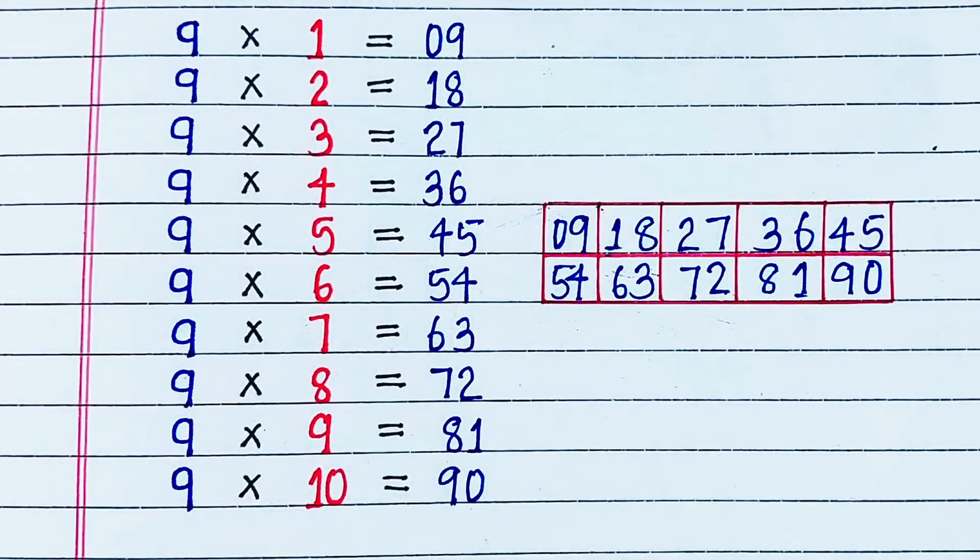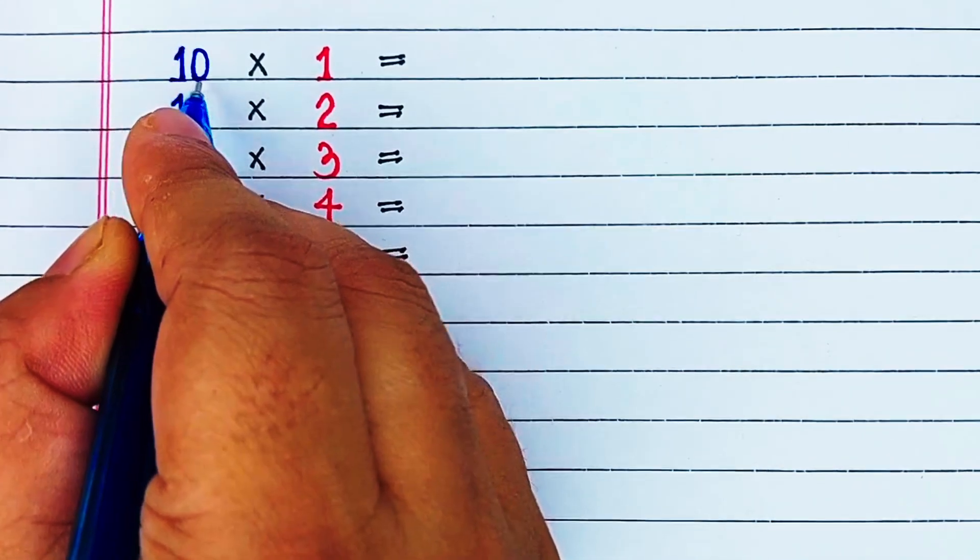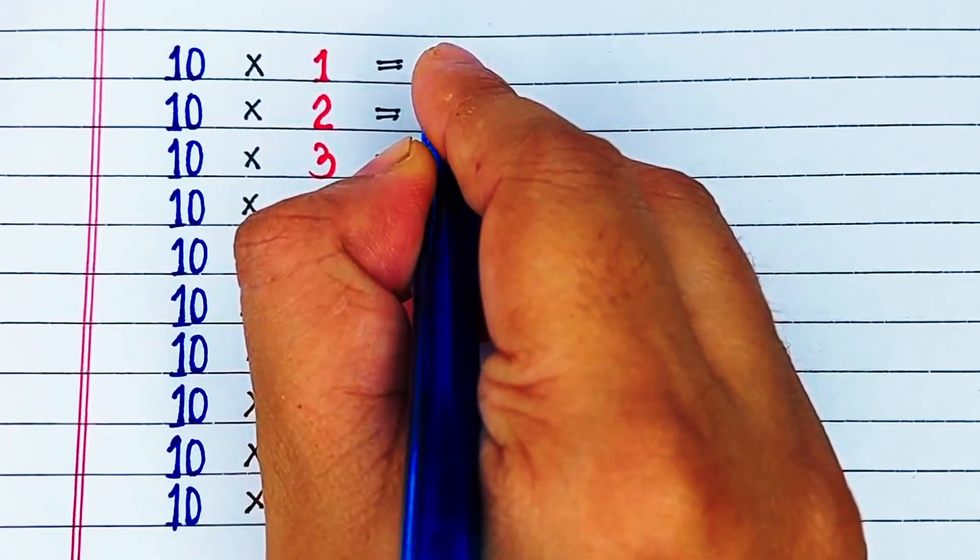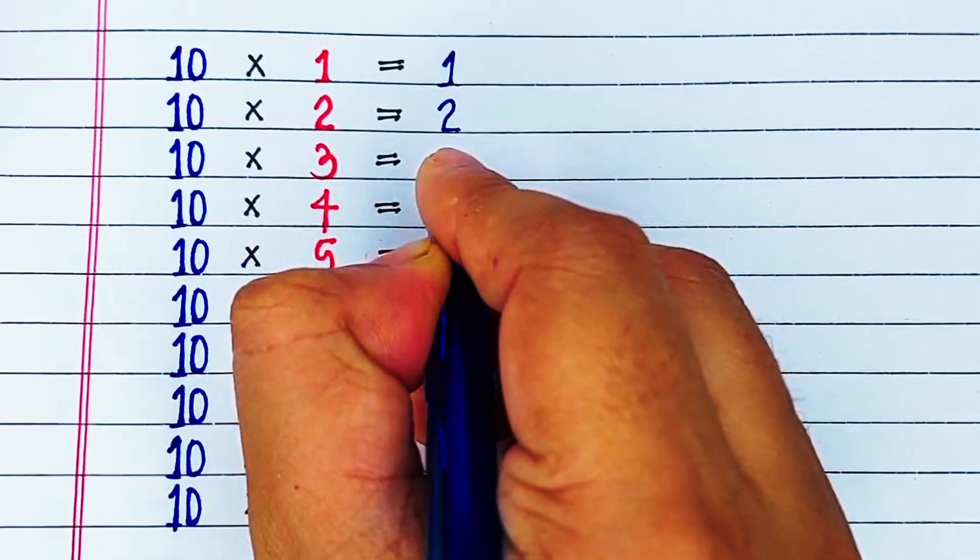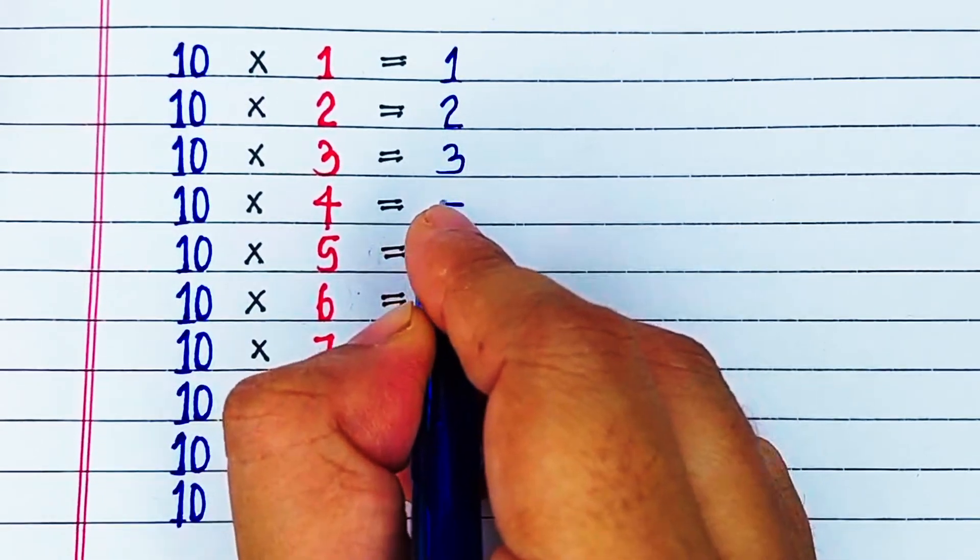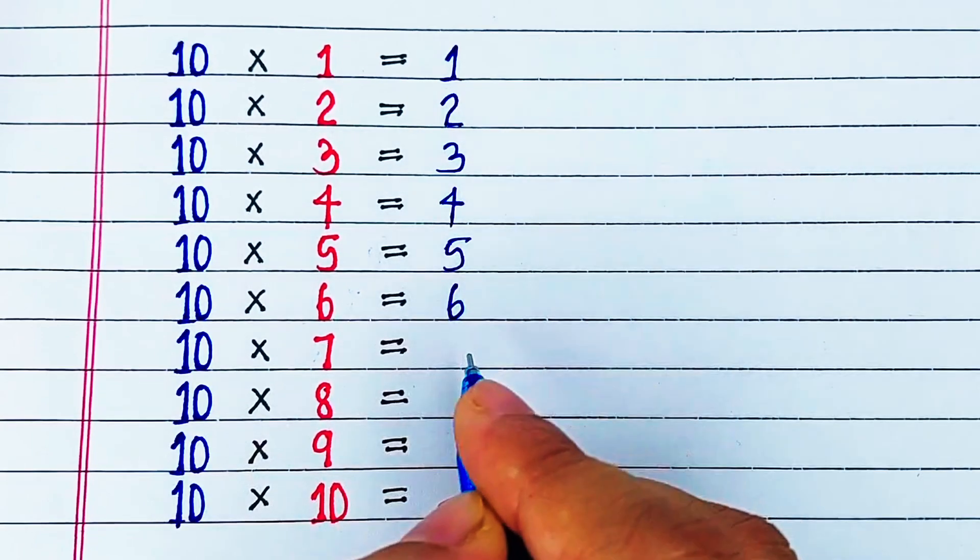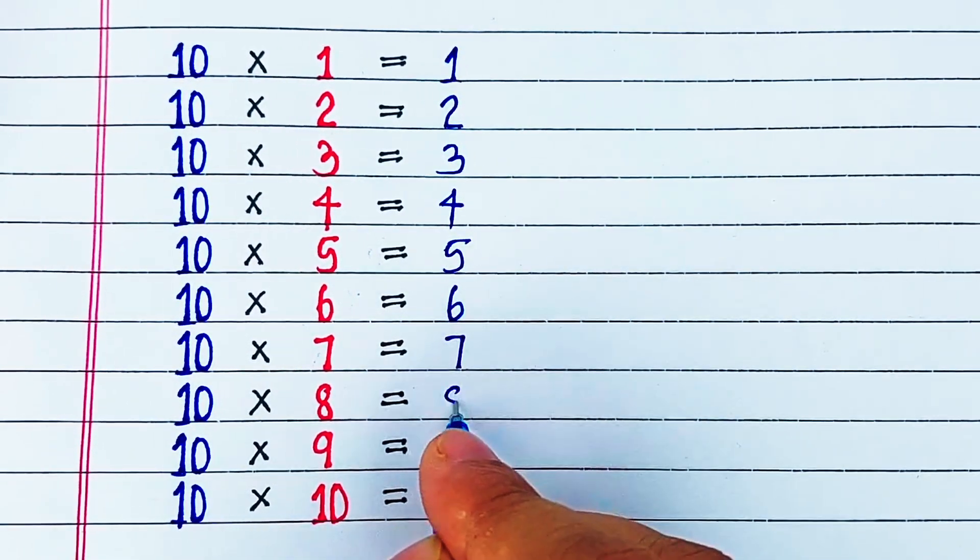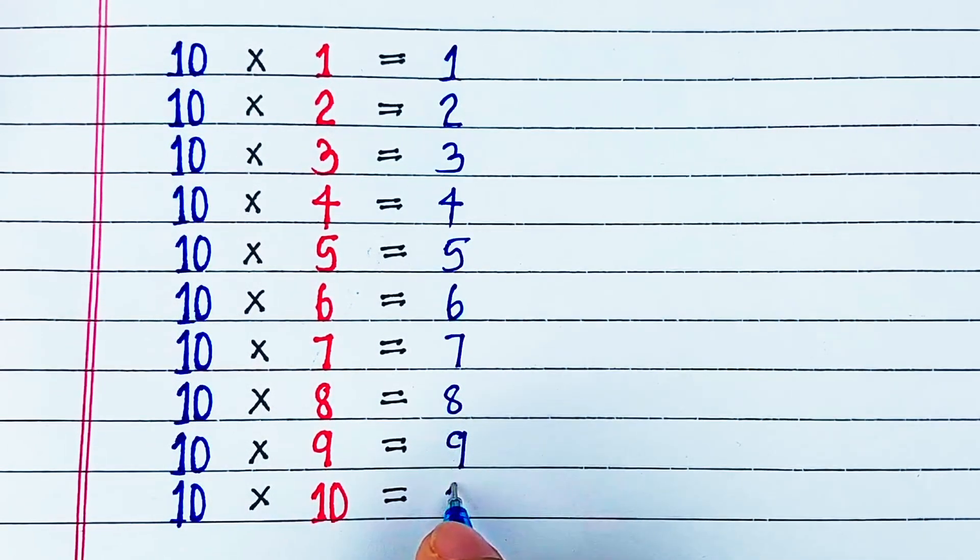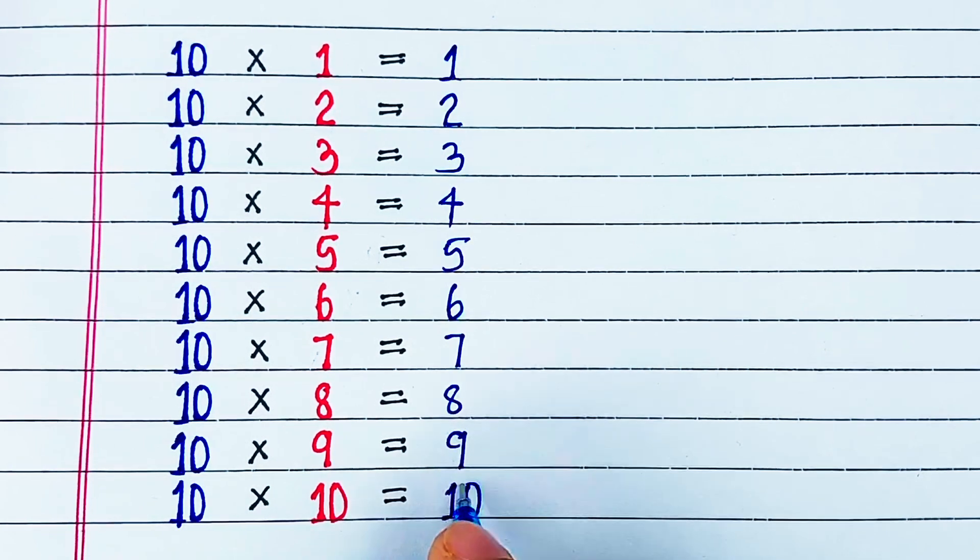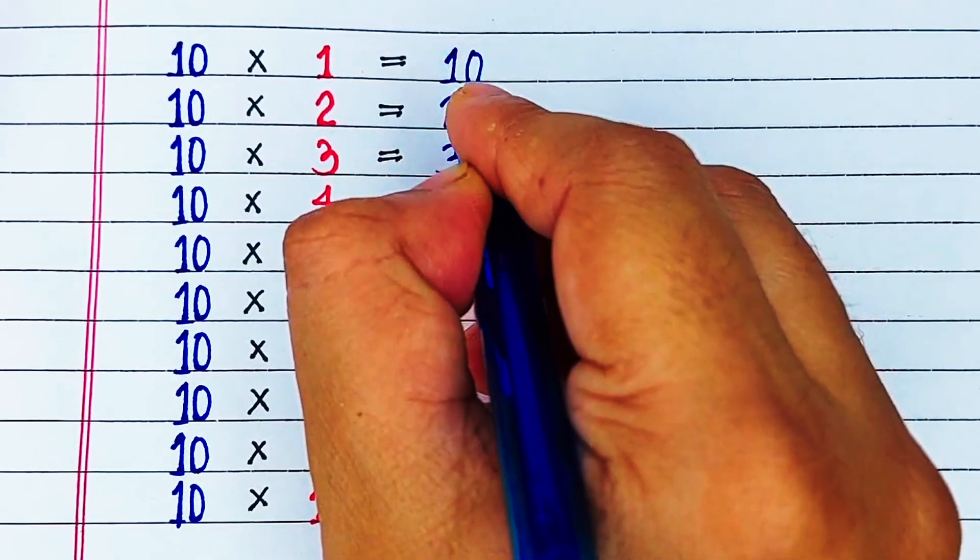Now we will learn the trick for table of 10. This is the easiest trick of all. Now we will write 1 to 10 from top to bottom: 1, 2, 3, 4, 5, 6, 7, 8, 9, 10. Now we will write 0 to the right of each of this number. So this forms our table of 10.